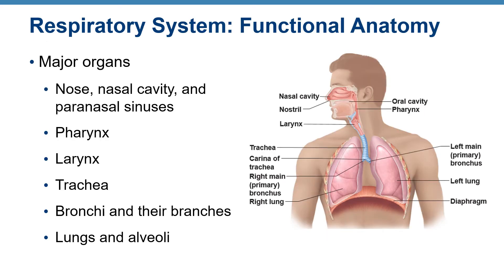The functional anatomy of the respiratory system includes major organs: the nose, nasal cavity, paranasal sinuses, pharynx, larynx, trachea, bronchi and their branches, lungs, and alveoli.